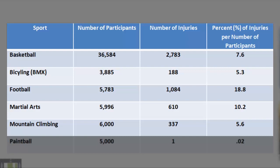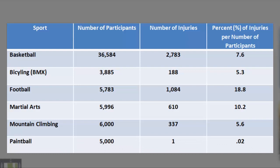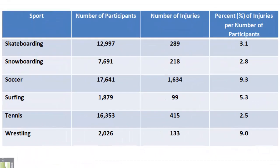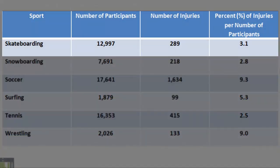Paintball. Number of participants: 5,000. Number of injuries: 1. Percent of injuries per number of participants: 0.02. Sport: Skateboarding. Number of participants: 12,997. Number of injuries: 289. Percent of injuries per number of participants: 2.1.